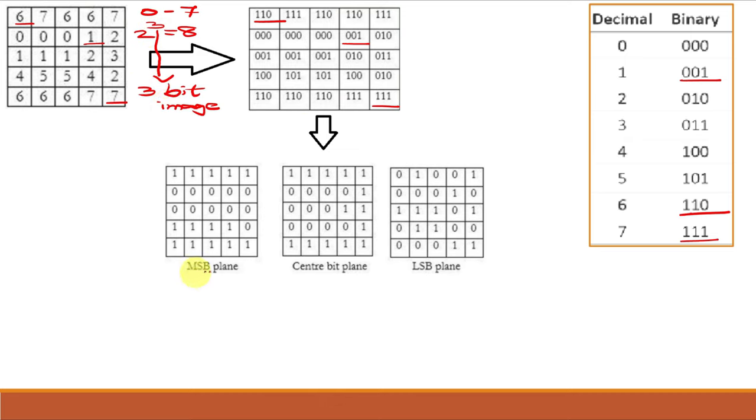Say our first bit plane is the MSB plane or most significant bit plane. So the MSBs from these values will be used for this MSB plane. So here the MSBs are 1, 1. Similarly, the center bit plane will be consisting of the center bits from these values and the LSB plane or least significant bit plane will be consisting of the LSB of these values.